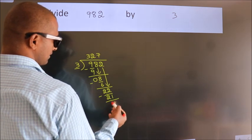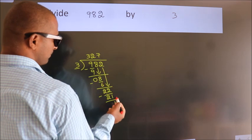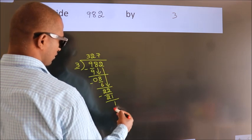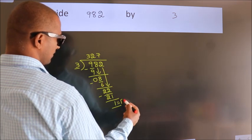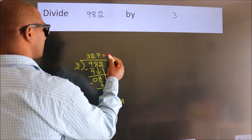After this, no more numbers to bring it down. So we stop here. This is our remainder. This is our quotient.